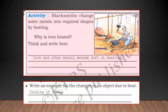Write an example for the change in an object due to heat. One best example is cooking of food. Whatever food you cook, it is heated. The state of the matter changes. You add water, water helps to cook the food.